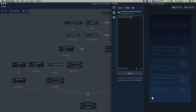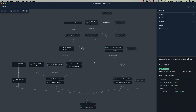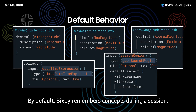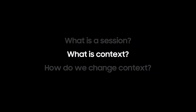Finally, what happens if we just say 'find earthquakes'? It performed the exact same query as before — Oakland, min magnitude 2.0, and 2018 — extrapolating context from the previous queries. This is the default behavior in Bixby. Unlike most programmatic languages where variables are forgotten after a function ends, these behave more like global variables within a session. Each concept — min magnitude, max magnitude, datetime expression, search region — is saved and pulled every time the find earthquakes action is fired.